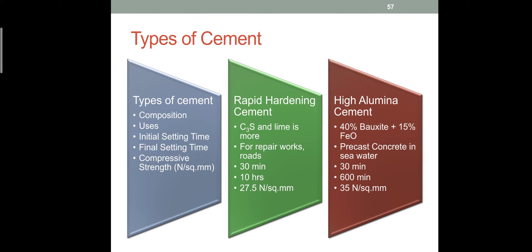The second type is high alumina cement. As the name indicates, there is a high amount of alumina. Bauxite is the ore of aluminium. Bauxite is nearly 40 percentage, and iron oxide is present, along with a small amount of lime and a small amount of clay, so alumina content will be more.